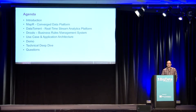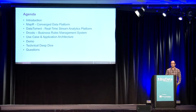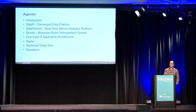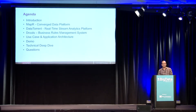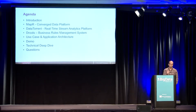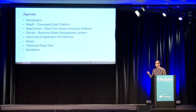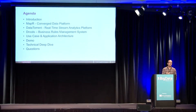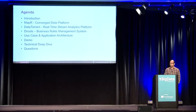They're also using rules with a rules engine because in their use case they want to apply a lot of business rules while processing the data. Once they process the data, they want to make a decision — is it eligible for automation or eligible to be passed to the next system? Today I'll cover MAPR at a high level, the converged data platform, DataTorrent, rules briefly, then a use case demo running on a MAPR sandbox, followed by Q&A.